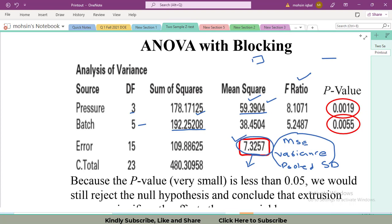We got this F value for the pressure. Likewise, to calculate the variation due to batches, 38.45 divided by 7.3257 gives 5.24. These P values can be obtained in Excel.